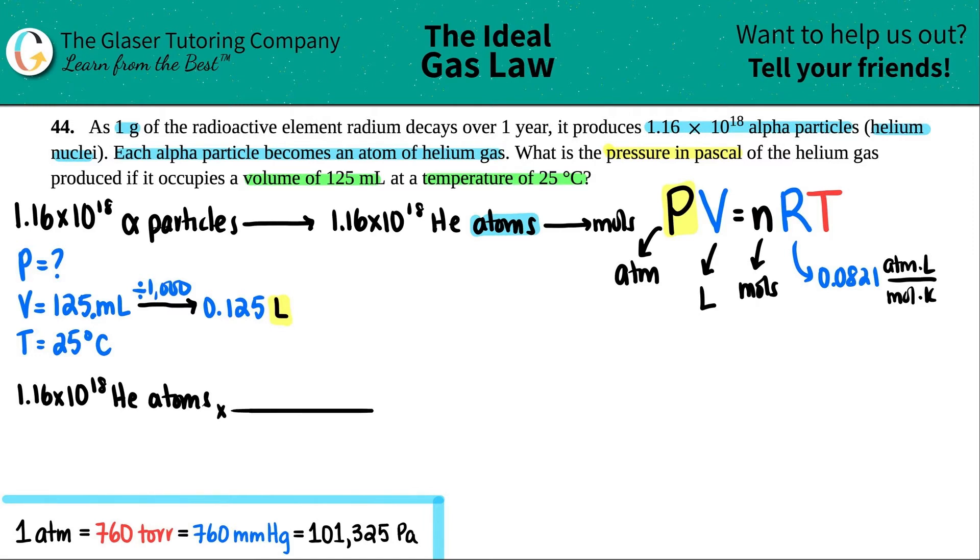So 1.16 times 10 to the 18th HE atoms. Let's just do a quick conversion. Times by a ratio. The atom unit is the one that we don't want, so atoms goes on the bottom and moles go on the top. If you're doing an atom to mole relationship, that's Avogadro's number. And Avogadro's number said that one mole of anything equals 6.022 times 10 to the 23rd atoms. And from there, we can get the mole values. Atom cancels out. 1.16 times 10 to the 18th, and that's divided by 6.022 times 10 to the 23rd. And 3 sig figs, but technically this isn't the answer, so I'm going to give it a couple of more numbers after the decimal. 1.926 times 10 to the negative 6th. And now that's moles of HE.